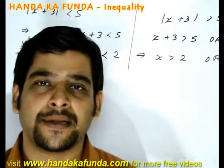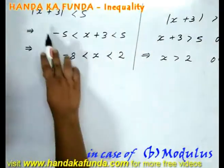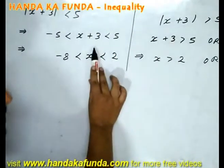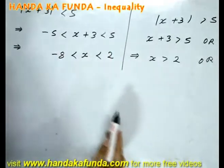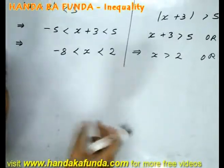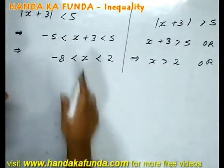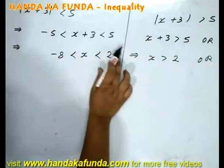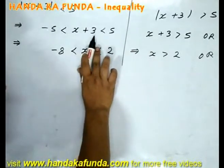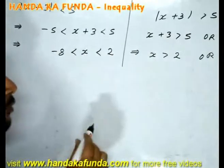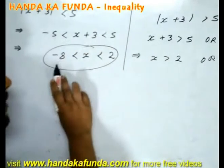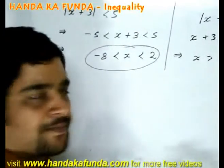Let us look at how to deal with inequalities in the case of a modulus. Suppose I am given that mod of (x plus 3) is less than 5. To solve this, x plus 3 must lie in the range of minus 5 to plus 5. Subtracting 3 from both sides, x lies between minus 8 and 2. So if the question is mod of (x plus 3) is less than 5, the answer is minus 8 less than x less than 2.